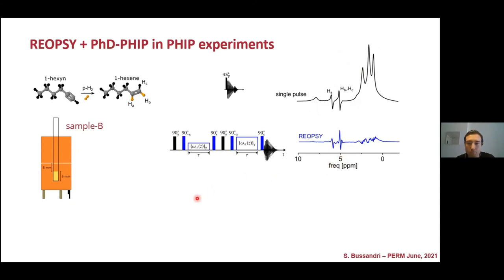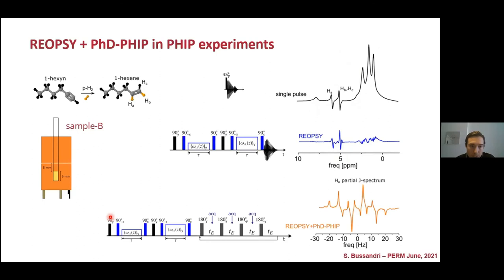And finally, we tested this combination of sequences, the RE-OPSY and the PhD-PHIP sequence. And this is the partial J spectrum that we obtained with an enhanced resolution and a really good signal-to-noise ratio compared to the low degree of hyperpolarization that we obtained in this particular setup.